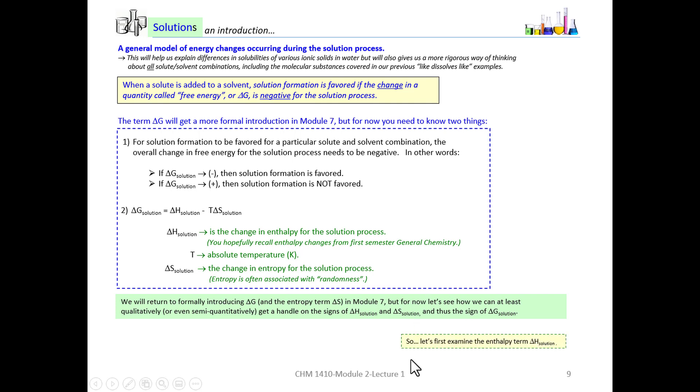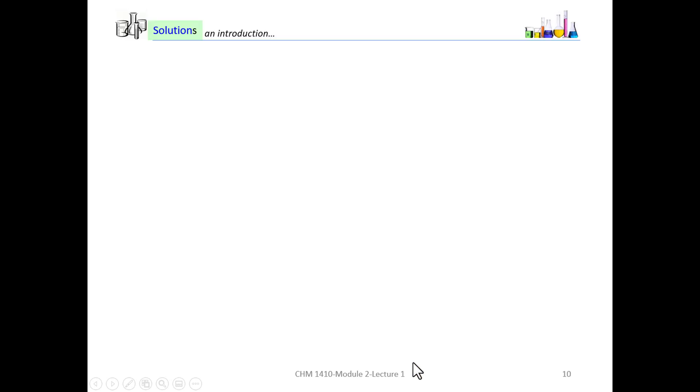Let's first examine the enthalpy term, delta H of solution. Recall from first semester general chemistry that the enthalpy change, delta H, for a process or reaction represents the flow of heat energy into the system — that would be when delta H is positive, an endothermic process — or out of the system, delta H being negative, an exothermic process. Technically, we can only call heat flow enthalpy change under conditions of constant pressure, but for now just think of delta H as heat flow.